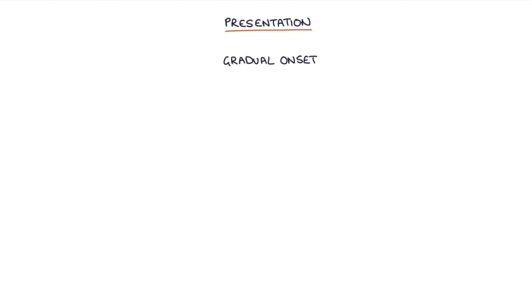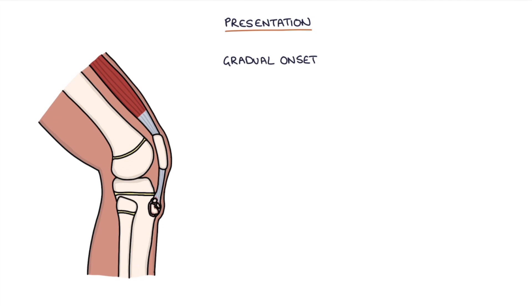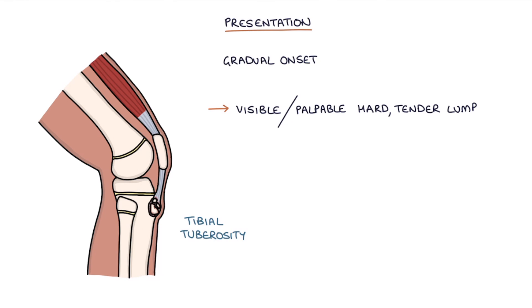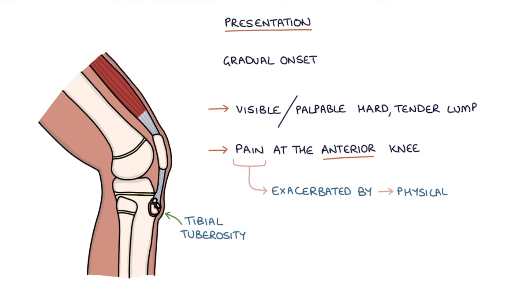Let's talk about the presentation. Osgood Schlatter disease presents with a gradual onset of symptoms. These symptoms are a visible or palpable hard and tender lump at the tibial tuberosity, pain in the anterior aspect of the knee, and the pain is exacerbated by physical activity, kneeling, and on extension of the knee.